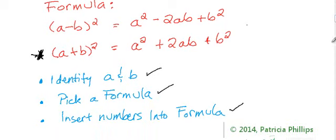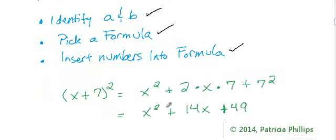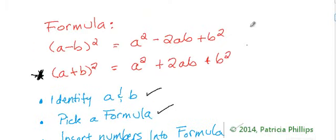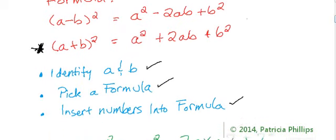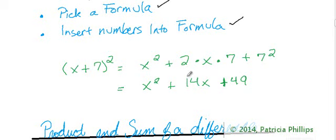And the next thing we have to do is insert our numbers into the formula. And when we do that, what we have is x plus seven squared equals x squared plus two times x times seven plus seven squared. And when we simplify that, the terms in the middle, instead of multiplying those in your head, I want you to go ahead and write it out. The formula said 2ab or 2 times a times b. So what you want to do the first time you write this is write everything out. 2 times x times seven.